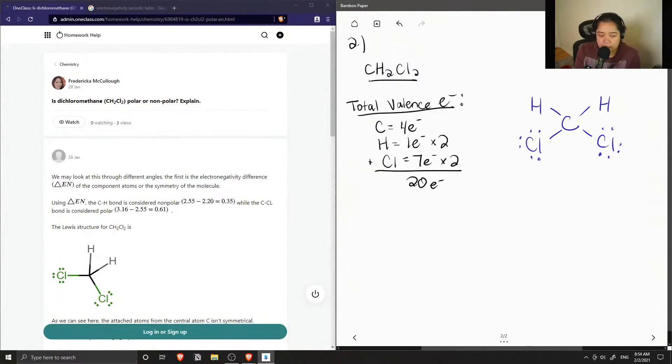So if we recall that one bond contains two bonding electrons, then we have four bonds and eight bonding electrons. And each chlorine atom has six electrons in the form of lone pairs.